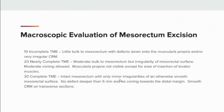In this slide, we'll discuss further the definitions of incomplete, nearly complete, and complete TME. Code 10, incomplete: there is little bulk to the mesorectum, which defects down onto the muscularis propria and/or a very irregular circumferential resection margin. Code 20, nearly complete: there is moderate bulk to the mesorectum but irregularity of the mesorectal surface, with moderate coning allowed. The muscularis propria is not visible except at the area of insertion of the levator muscles. Code 30, complete: intact mesorectum with only minor irregularities of an otherwise smooth mesorectal surface, no defect deeper than 5 millimeters, no coning towards the distal margin, and a smooth circumferential resection margin on transverse sections.